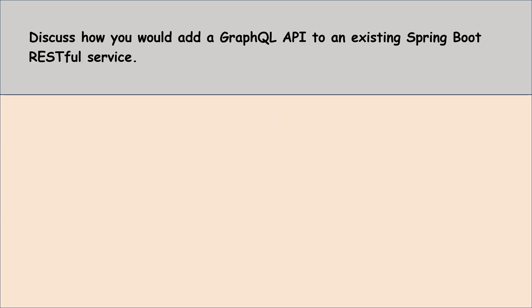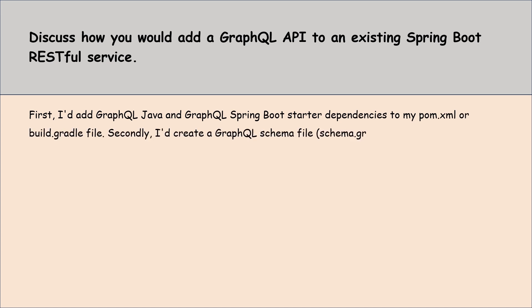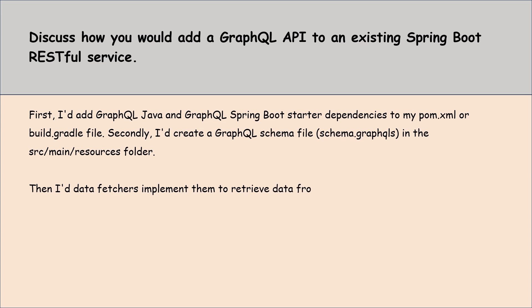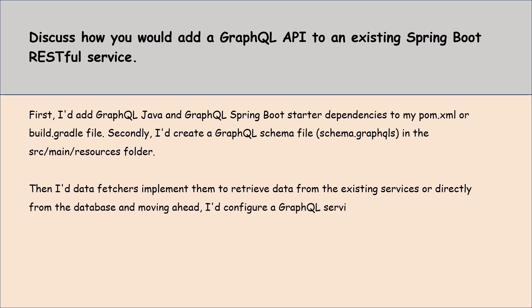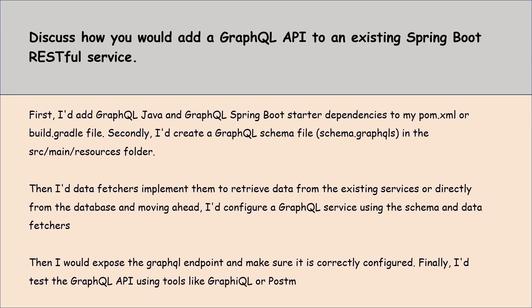Moving to the next question: discuss how you would add a GraphQL API to an existing Spring Boot RESTful service. First I would add graphql-java and graphql-spring-boot-starter dependencies to my pom.xml or build.gradle file. Second I would create a GraphQL schema file in src/main/resources. Then I would implement data fetchers to retrieve data from existing services or directly from the database. I would configure a GraphQL service using the schema and data fetchers, expose the GraphQL endpoint, and test the GraphQL API using tools like GraphiQL or Postman.